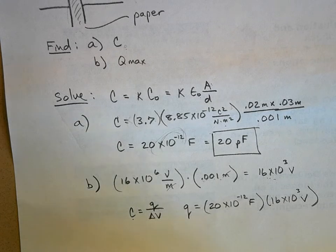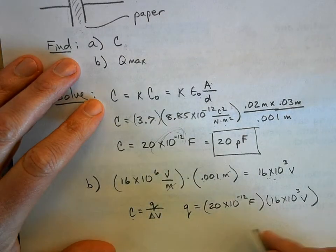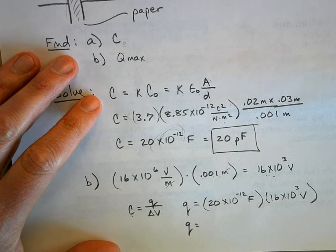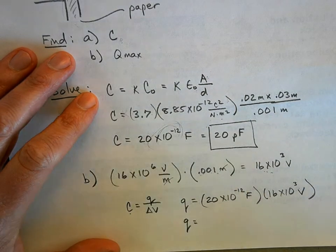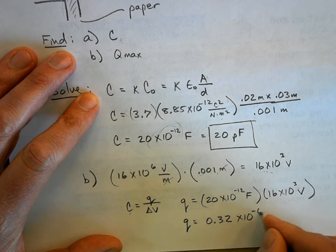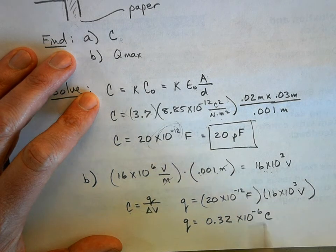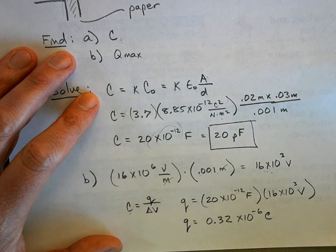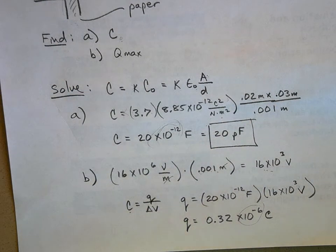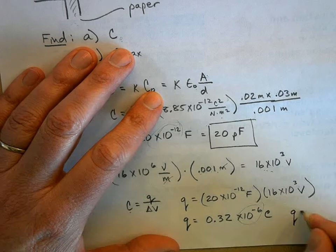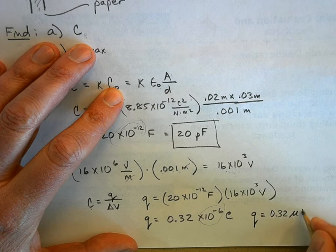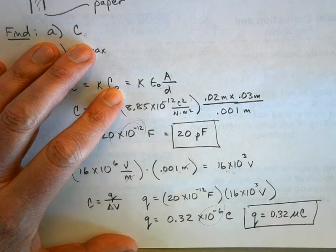And you get an answer there. And you'll plug all that in. And when you do, you get 0.32 times 10 to the negative 6 coulombs. Now, why would I express it like this? Why don't I go 3.2 times 10 to the negative 5, which is probably what your calculator will give you? Yeah, because we usually write charge in terms of microcoulombs. So Q is equal to 0.32 microcoulombs of charge. And that's how much charge will be stored on this capacitor.